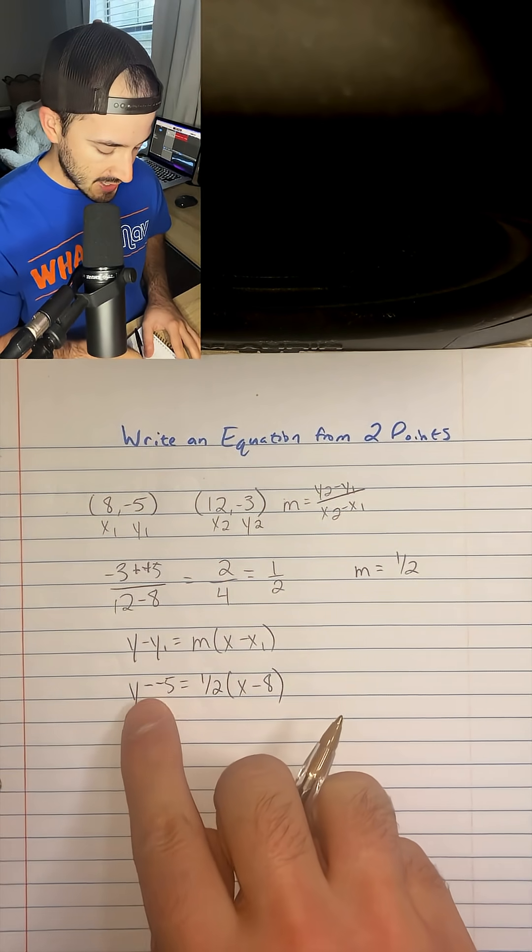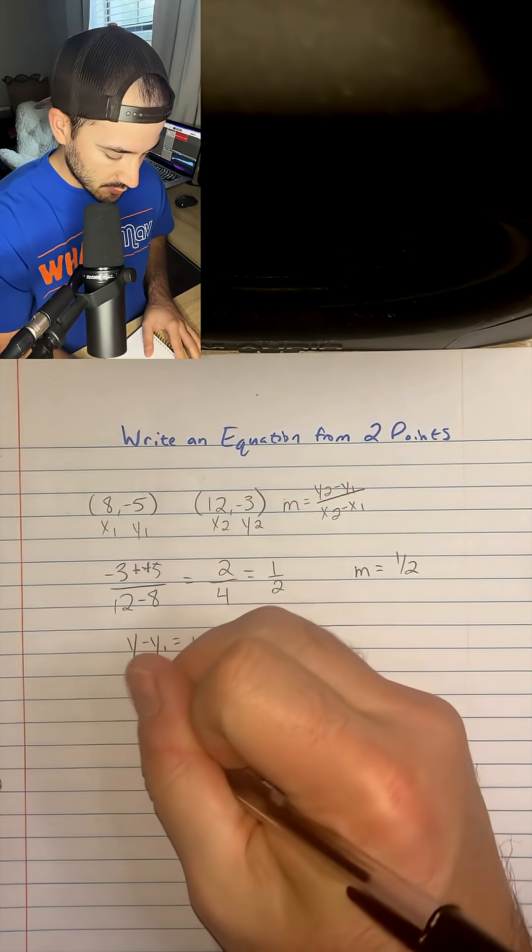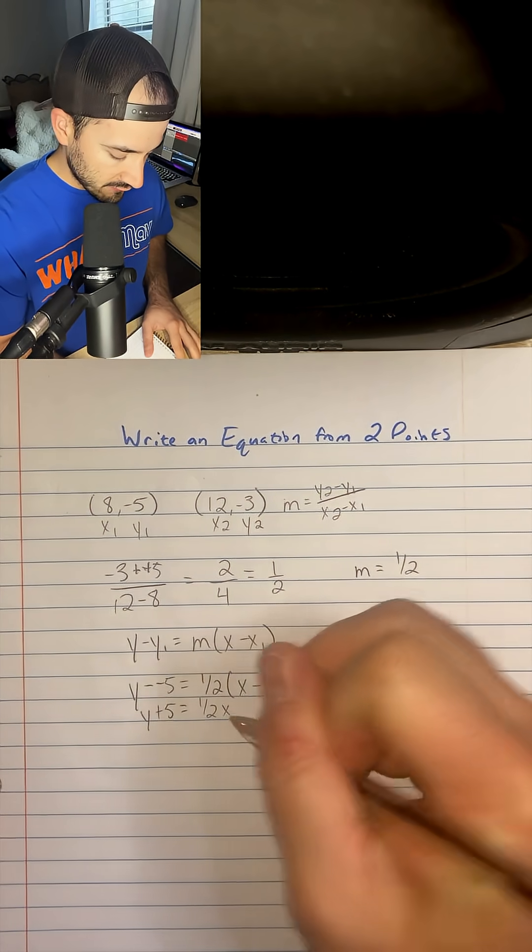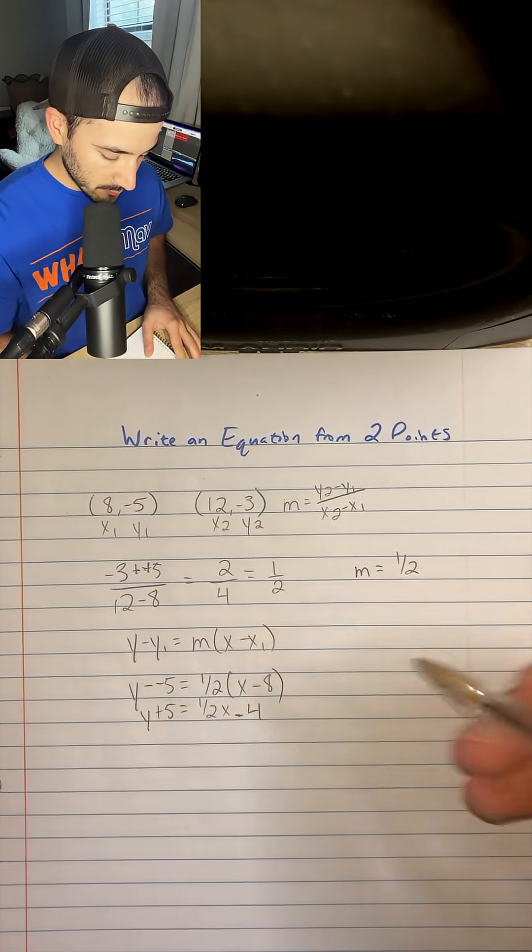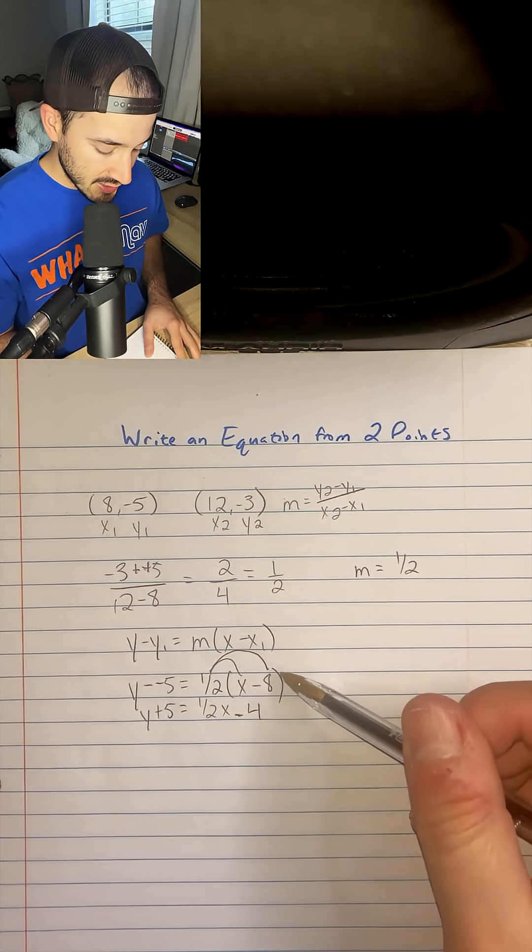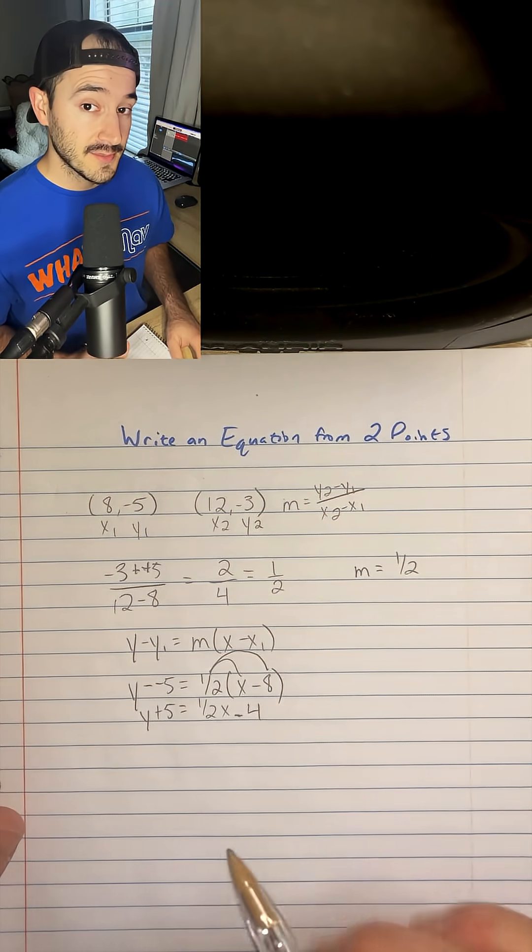I'm going to go ahead and change this minus negative to just plus. So we'll have y plus 5 equals 1 half x minus 4, because 1 half times x is 1 half x and 1 half times negative 8 is just negative 4. So now we just have one more step to get it to slope-intercept form.